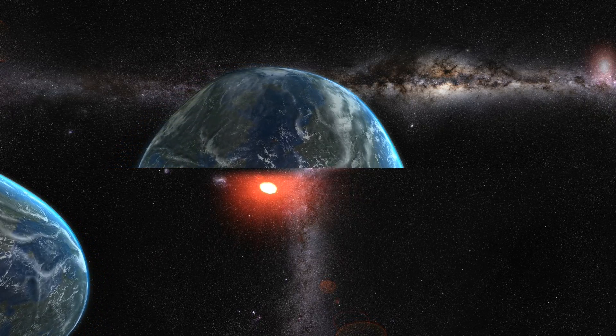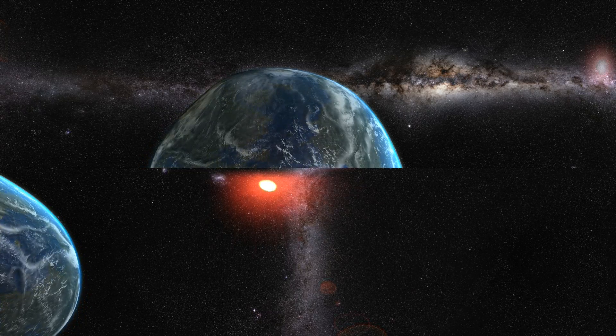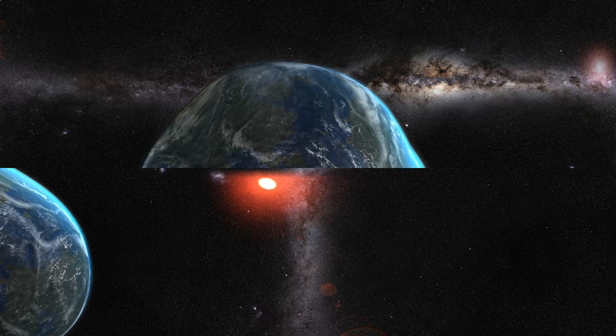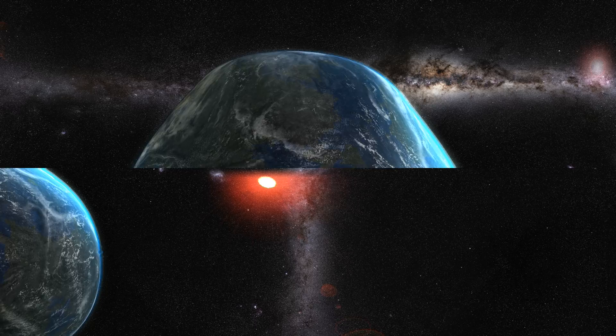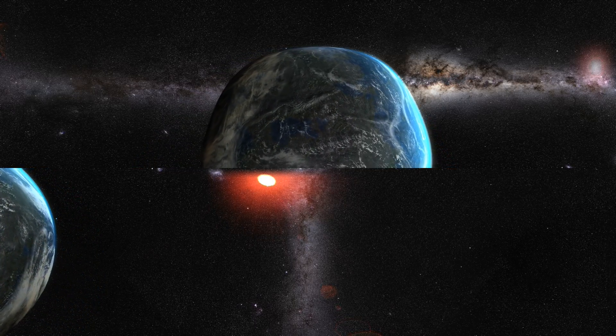Kepler-1649c has a neighboring planet, Kepler-1649b, which orbits the red dwarf at about half the distance and is thus probably too hot to support life as we know it. Kepler-1649c's true habitability prospects are tough to gauge.